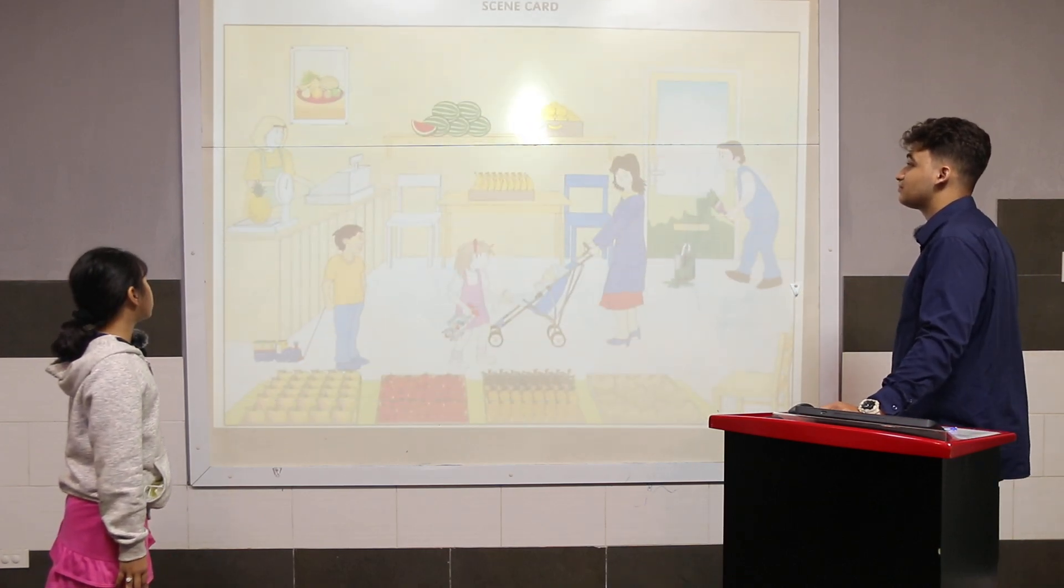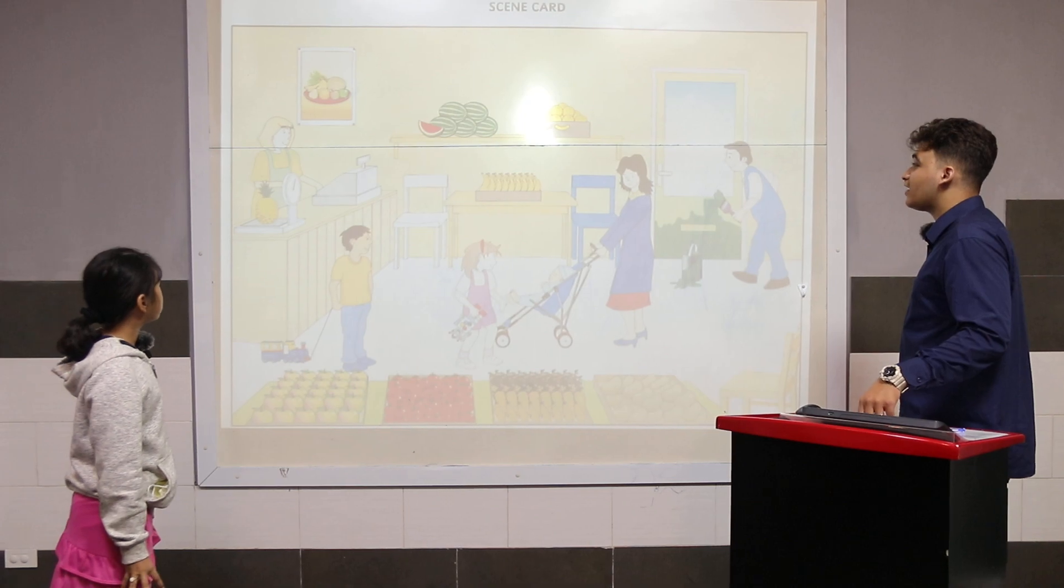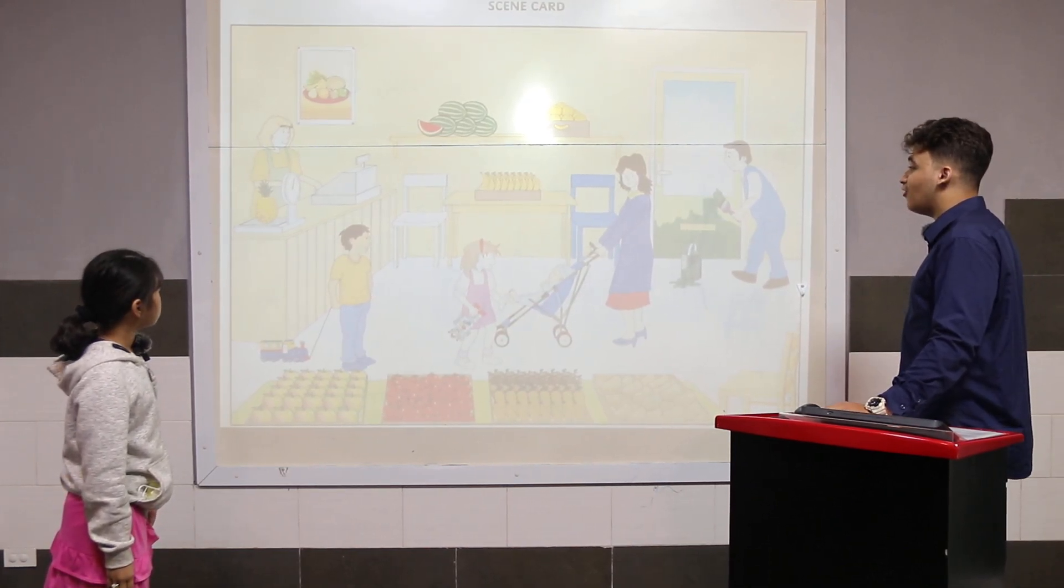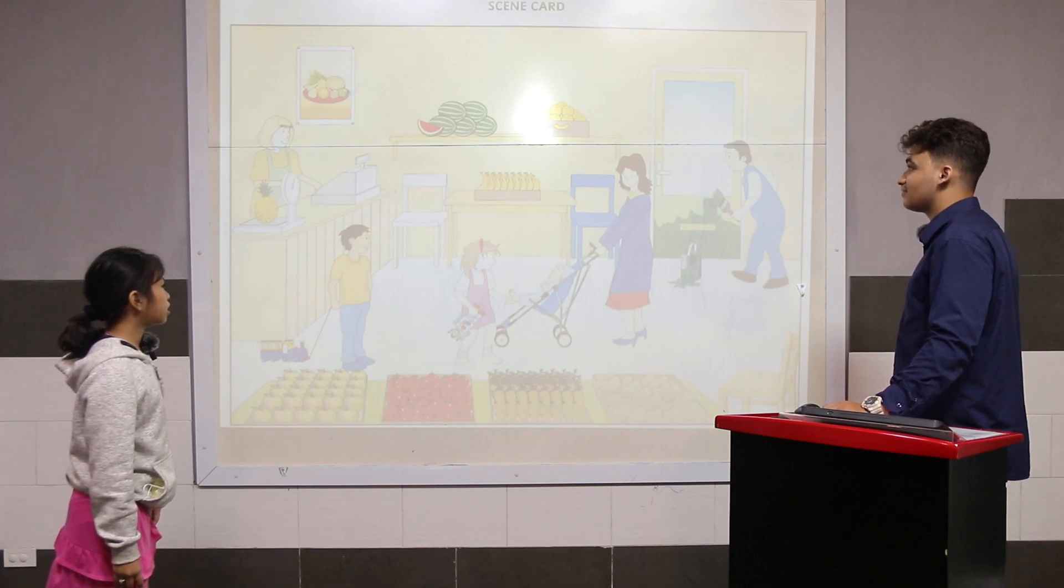Where are they? They are in the supermarket. How many people can you see? I can see six people. Excellent. How does the baby feel? Baby feels it's tiny.